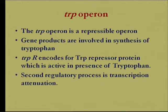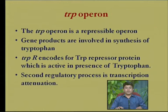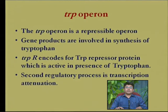Now we will look at another operon model: the trp operon. In this operon, genes needed for the biosynthesis of tryptophan are clustered together and transcribed through a single promoter. The trp operon is an example of a repressible operon. Another mechanism of regulation seen in the trp operon is attenuational control.